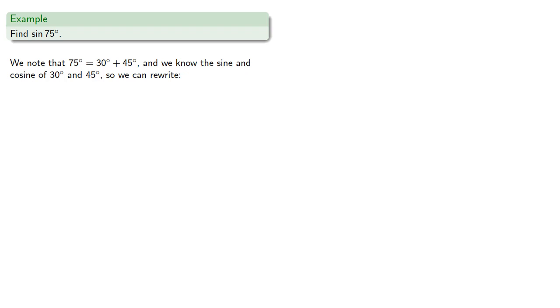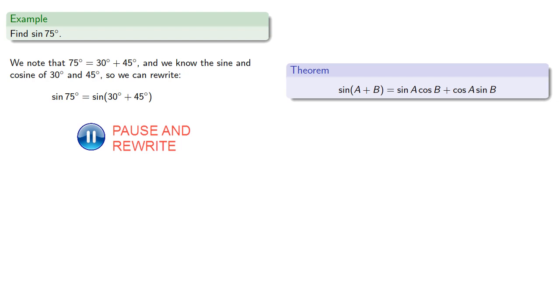And so we can rewrite sine of 75 is the sine of 30 plus 45, our theorem gives us a formula of the sine of b, substituting in our values, and simplifying.